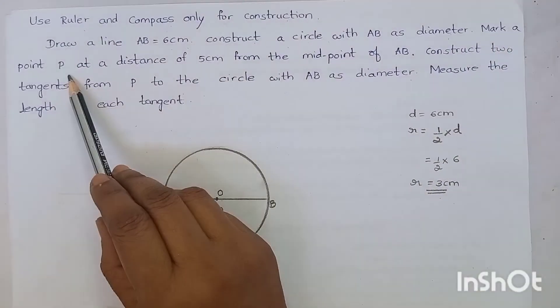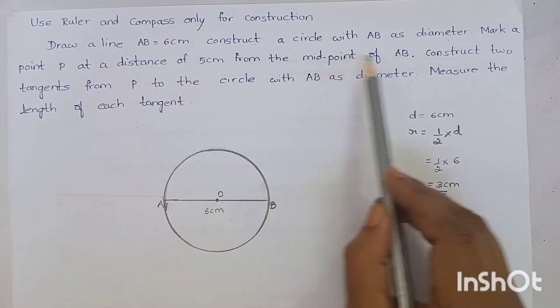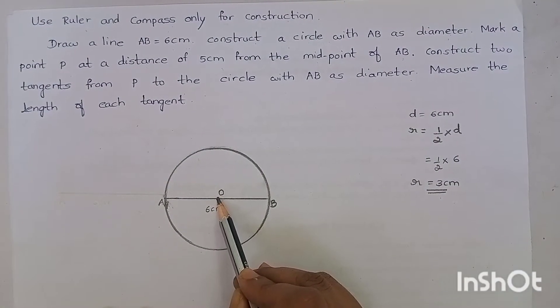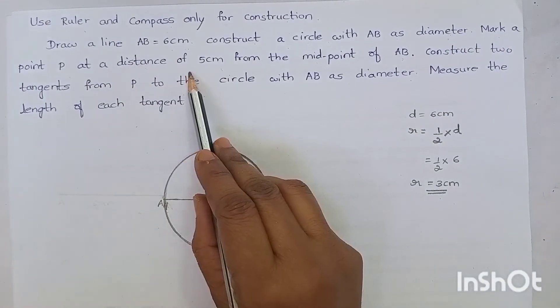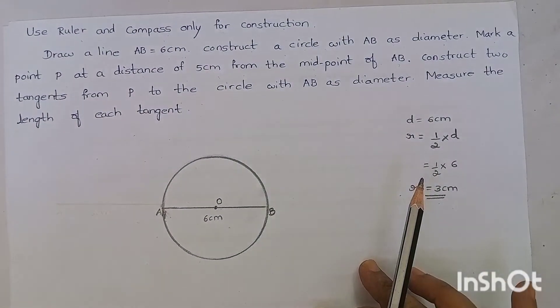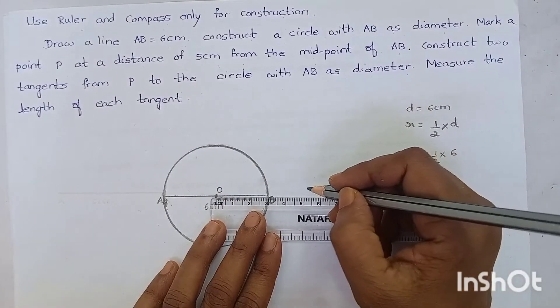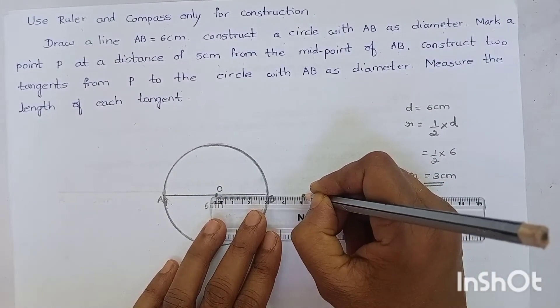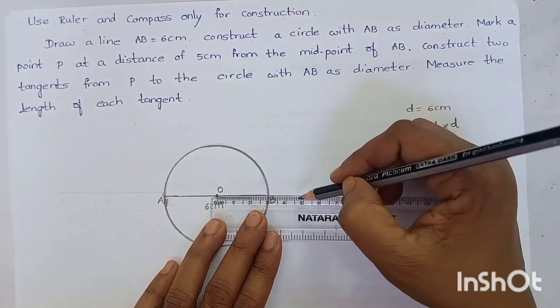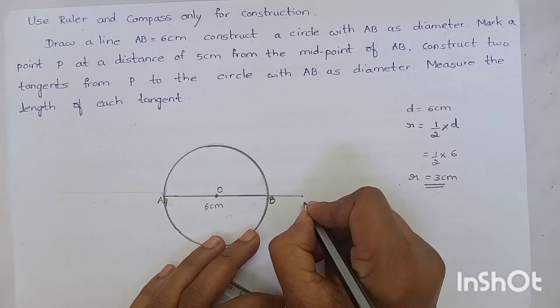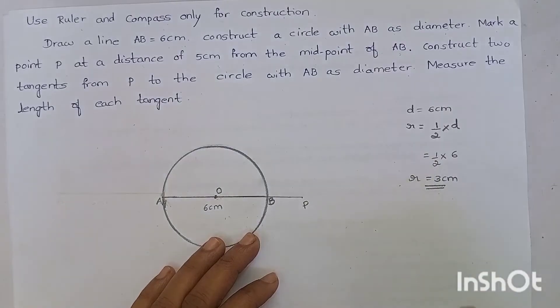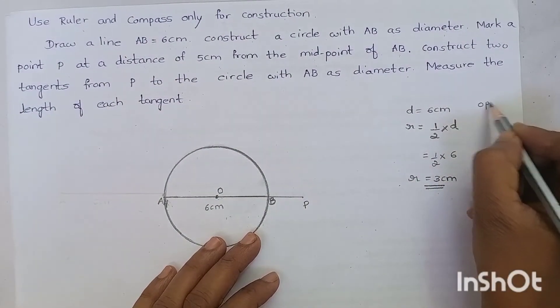Now, mark a point P at a distance of 5 cm from the midpoint of AB. This is the midpoint of AB, right? And we have to mark a point P at a distance of 5 cm from the midpoint of AB. Therefore, this is the midpoint. From here, we have to mark a point 5 cm and draw a line. And mark it as P. Okay? OP is 5 cm.